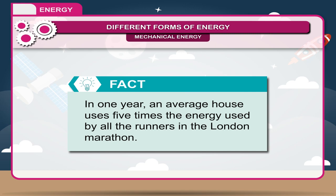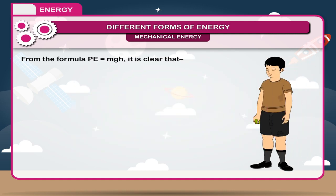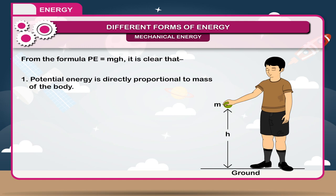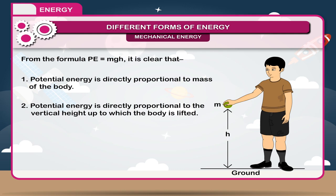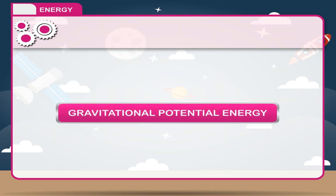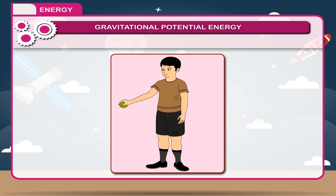The formula for potential energy is: PE = mgh. From this formula, it is clear that: (1) potential energy is directly proportional to the mass of the body, (2) potential energy is directly proportional to the vertical height up to which the body is lifted, and (3) potential energy is directly proportional to acceleration due to gravity.